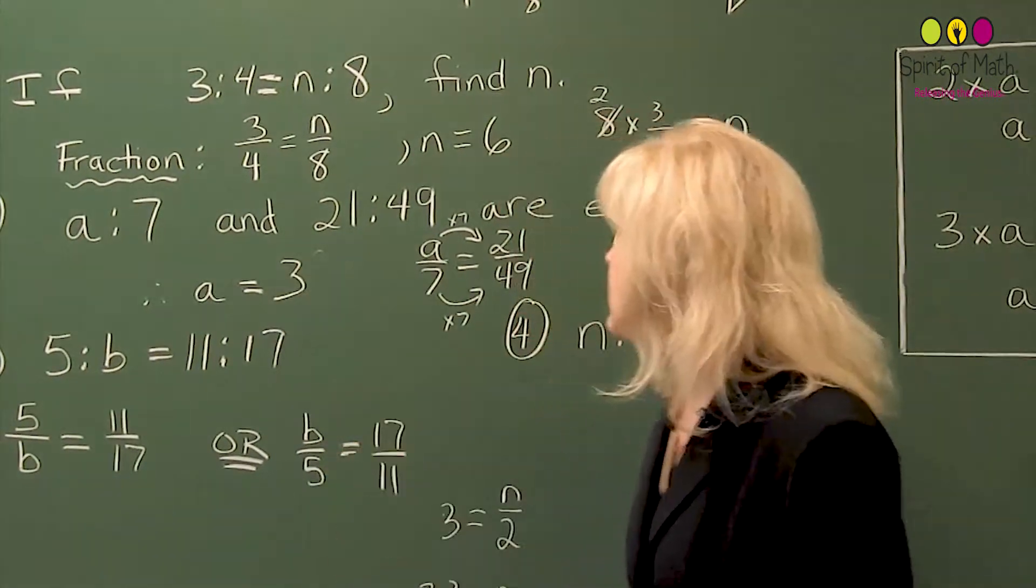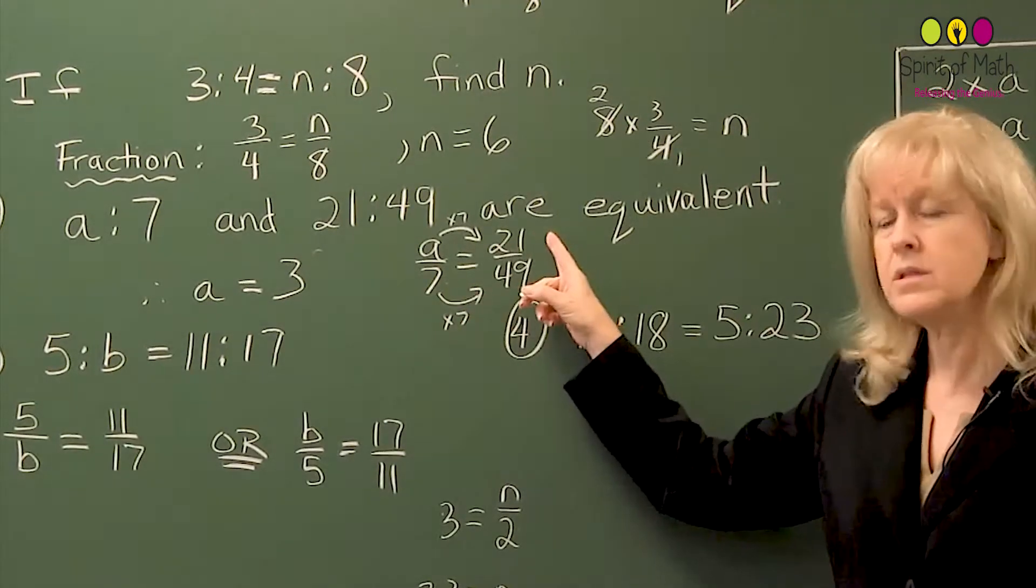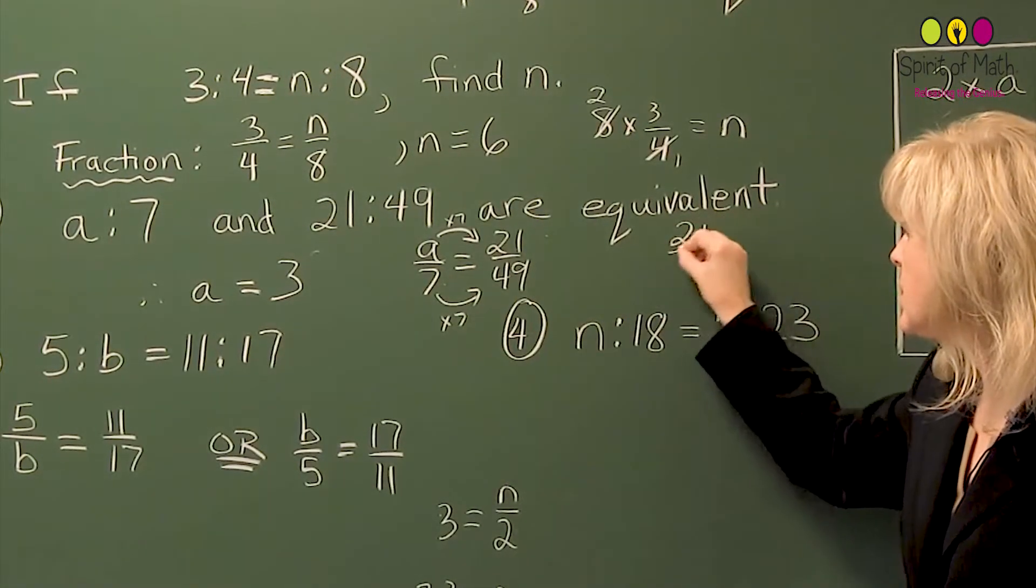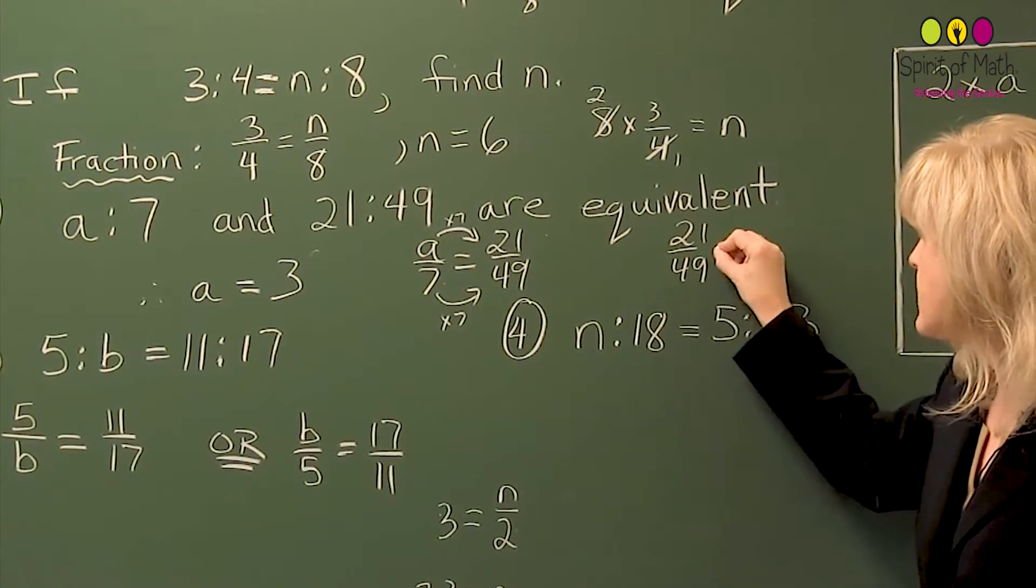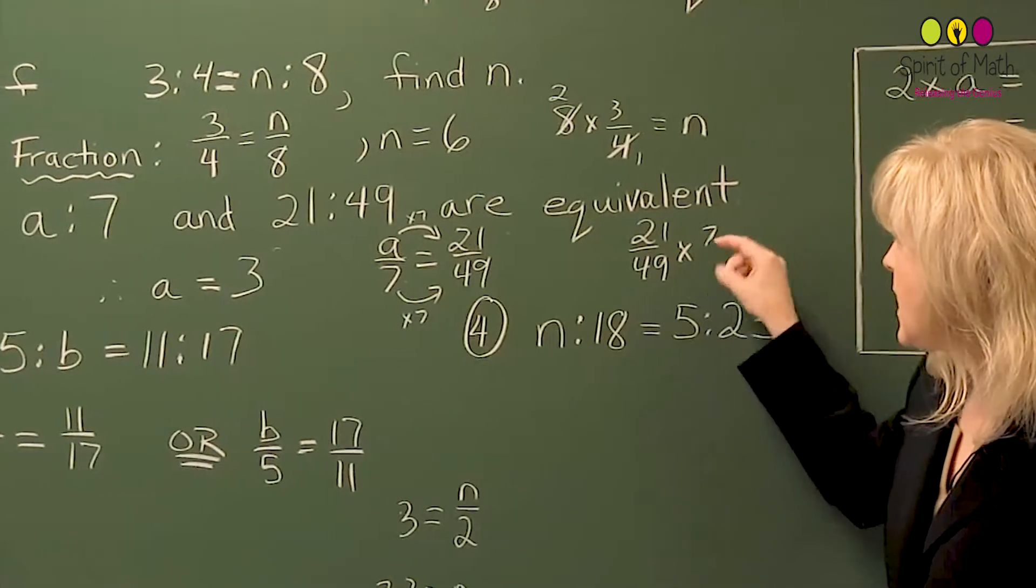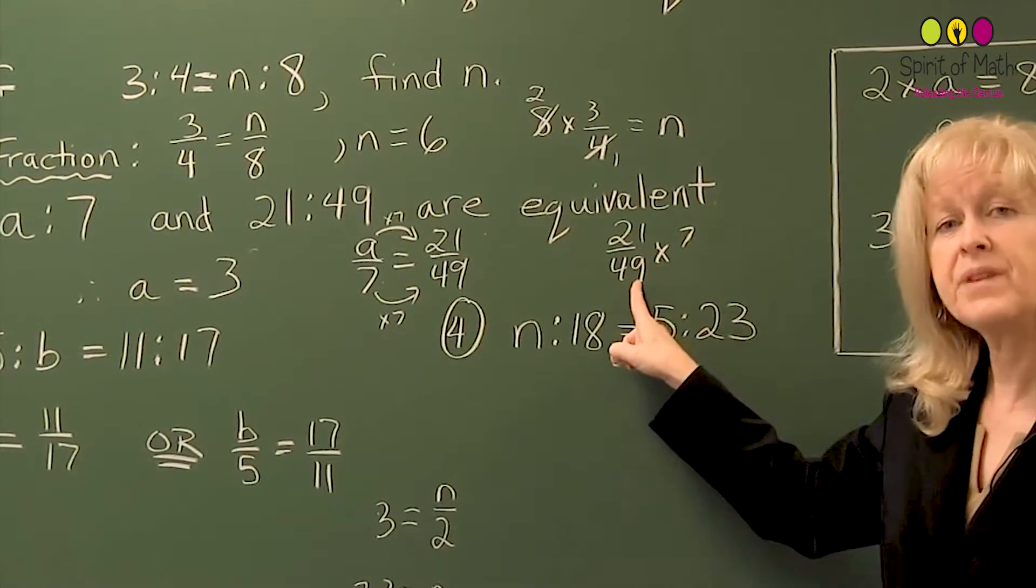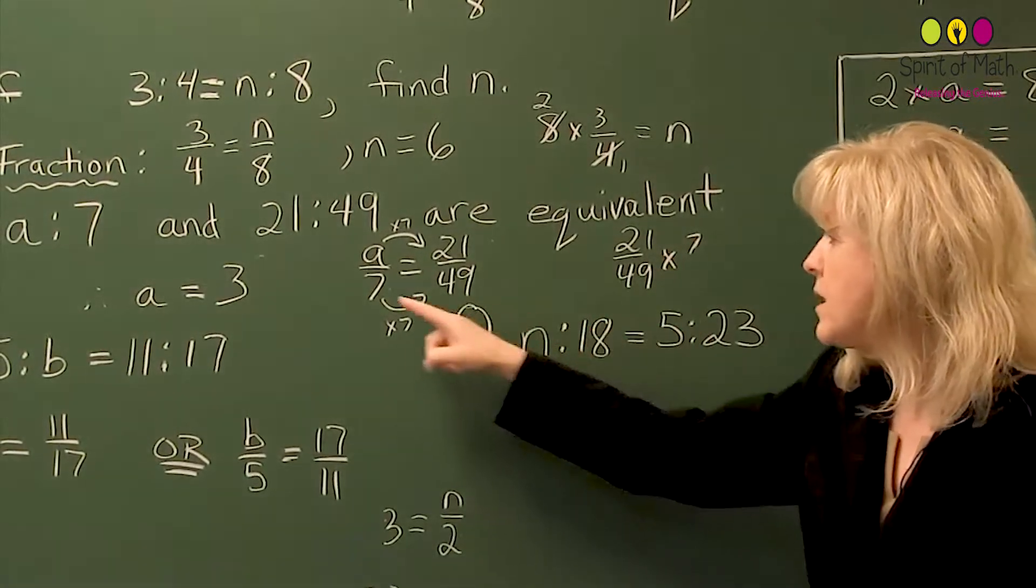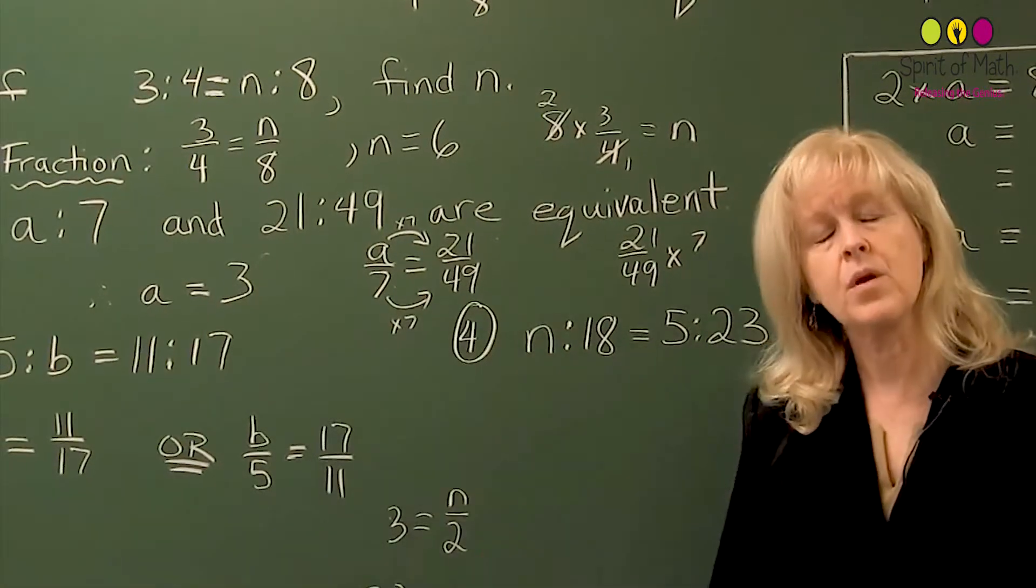Again, you can multiply up. So you can say 21 over 49 times seven. And seven goes into 49 seven times. 21 divided by seven would be three. So you get your answer again. So there's your equivalent fraction, or rationals, calculating for an unknown.